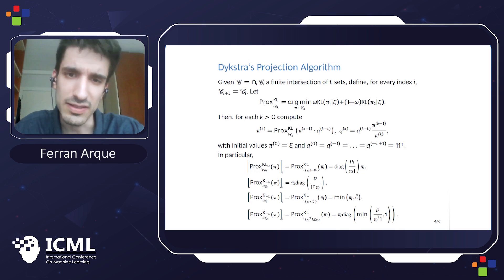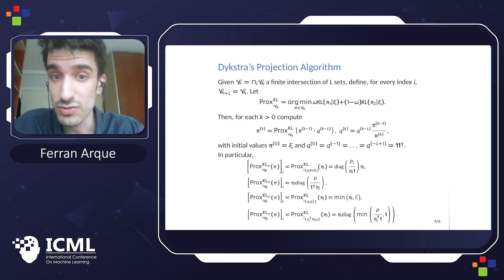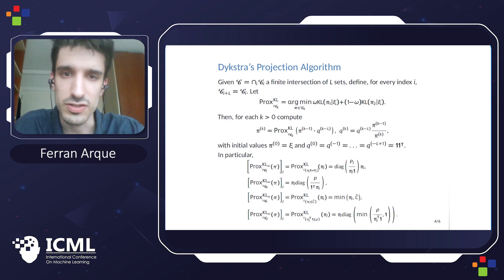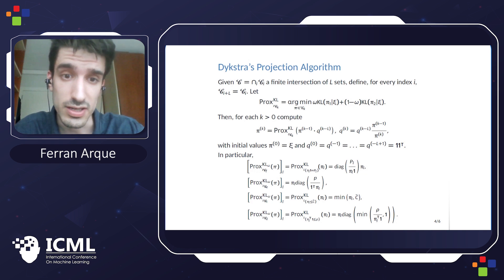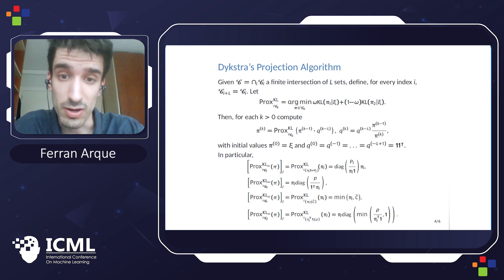The advantage of writing the problem as such is that it allows us to use the Sinkhorn projection algorithm, which is an iterative procedure where, in our case, every step has a closed form, as we see below, and it is very easy to implement and very fast, since it only requires matrix and vector products.